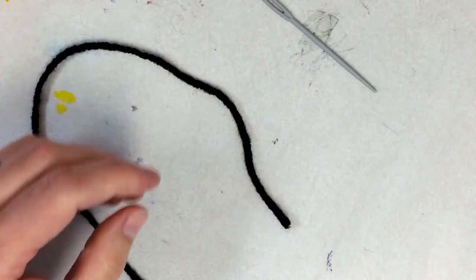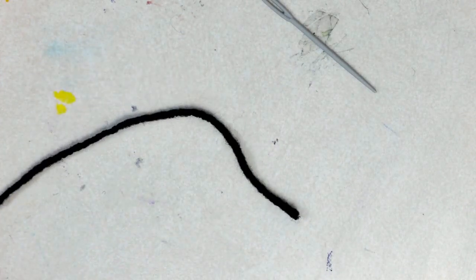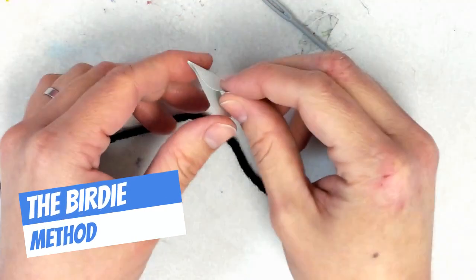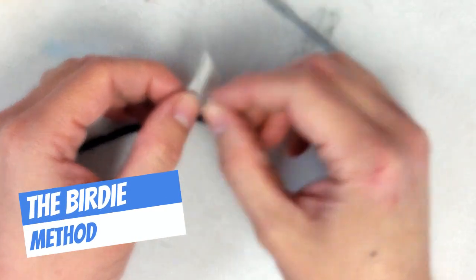An easier way to thread a needle is by using a birdie. All a birdie is, is a piece of paper that's folded in half.